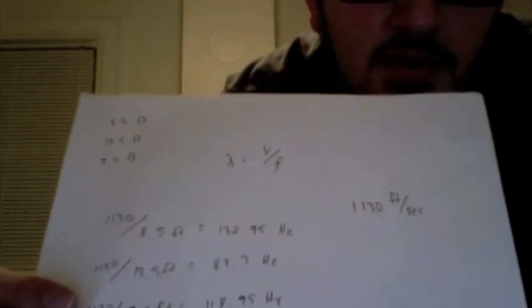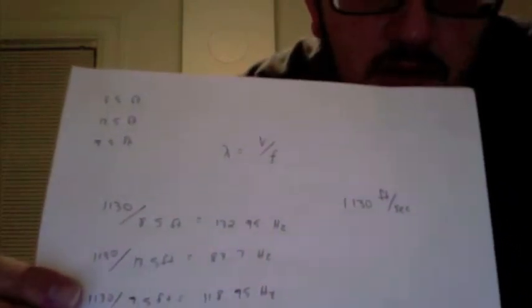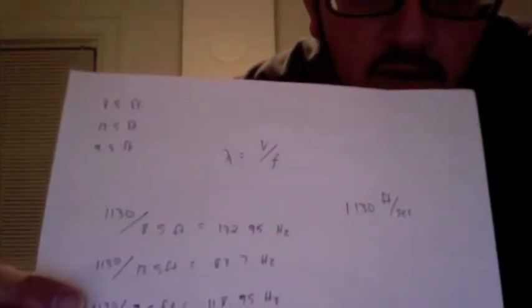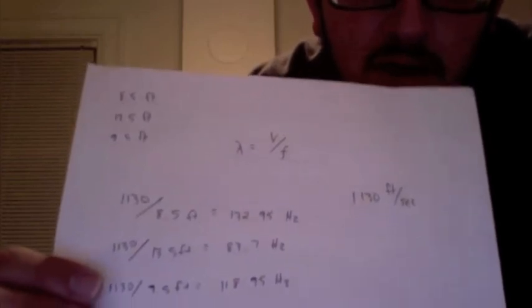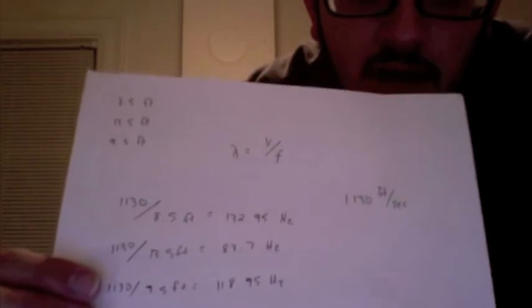According to the fairly simple calculations that we did, standing waves would occur in the room at 132.95 hertz, 83.7 hertz, and 118.95 hertz. According to the back of the calculation sheet — which is actually the front of the standing wave project sheet — that is all I have to cover in this video.